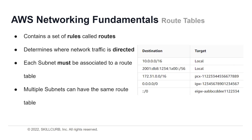When you make a VPC, you get a route table with it. A route table contains a set of rules called routes that determine where network traffic from your subnet or gateway is directed. Your VPC has an implicit router, and you use route tables to control where traffic is directed. Each subnet must be associated with a route table — called a subnet route table. A subnet can only be associated with one route table at a time, but multiple subnets can share the same route table.